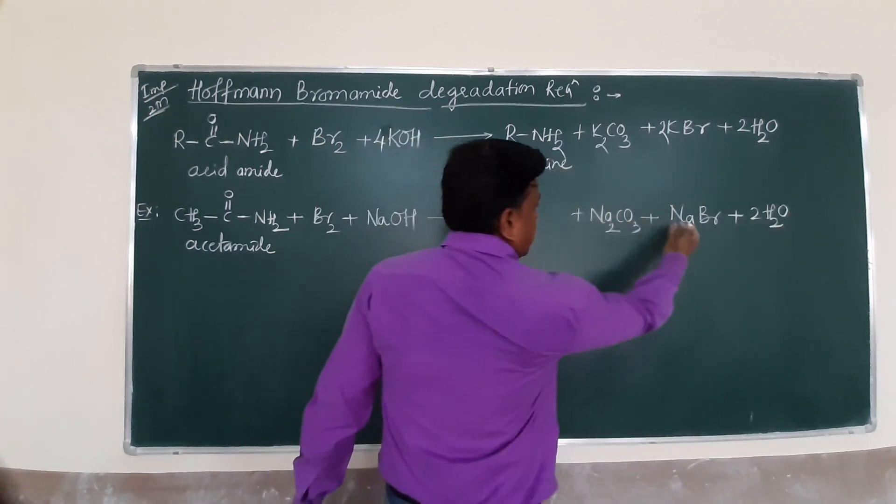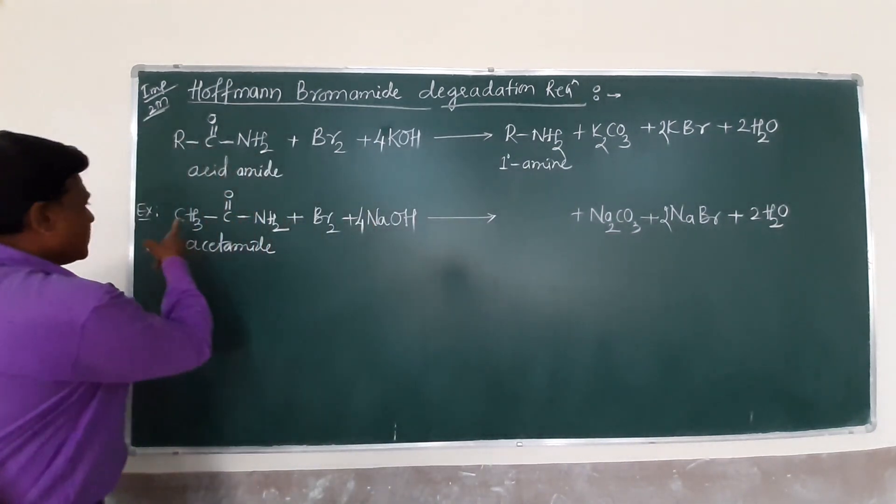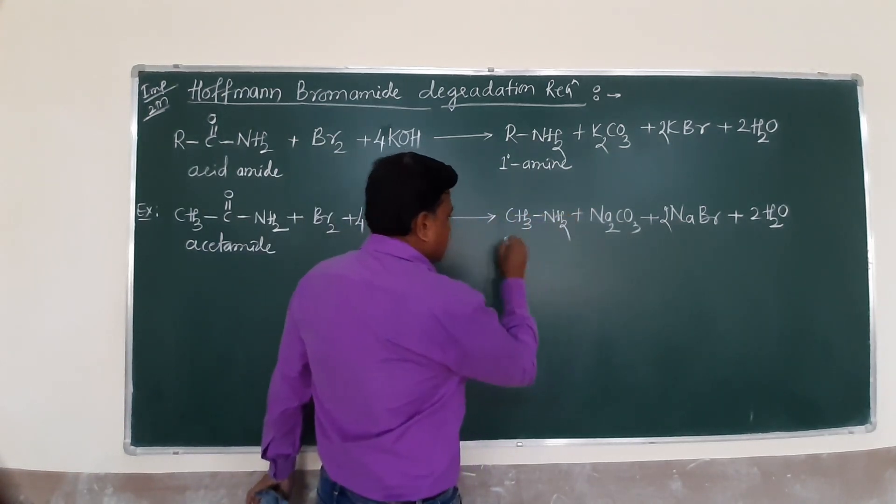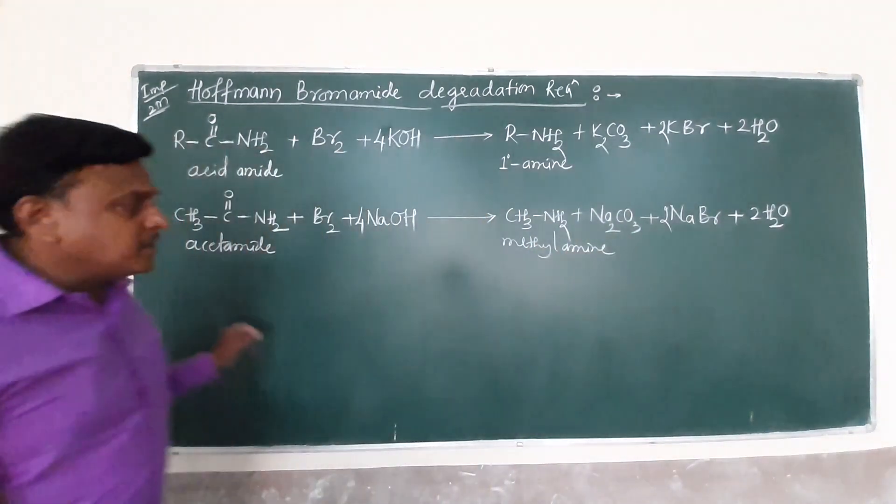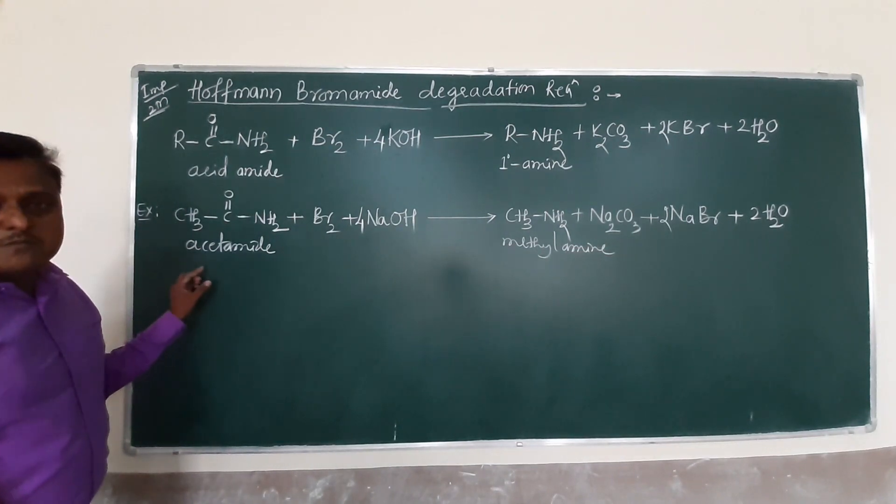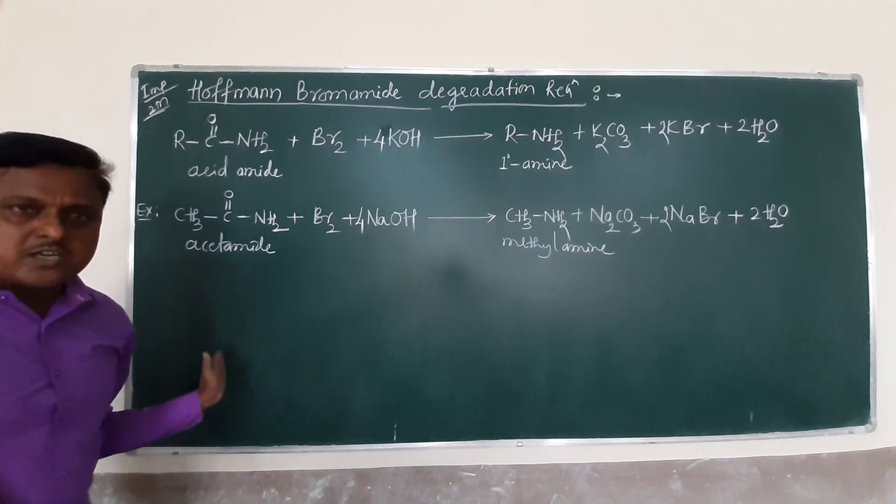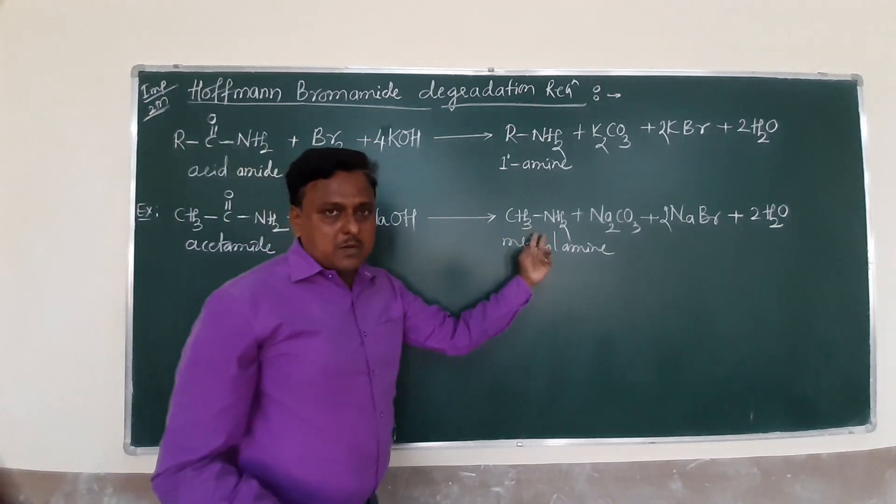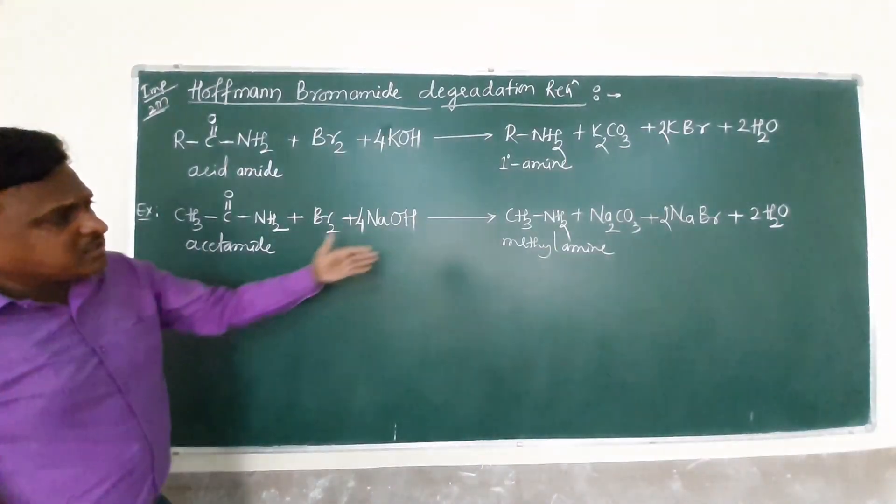In the place of KOH we can use NaOH also. The product, the degradation means removal of this carbonyl carbon. Now this is sodium carbonate, this is sodium bromide, and water. 2 molecules of water. This is sodium, balance with 2 here, it requires 4 here. Now it remains CH3-NH2, this is your methyl amine.